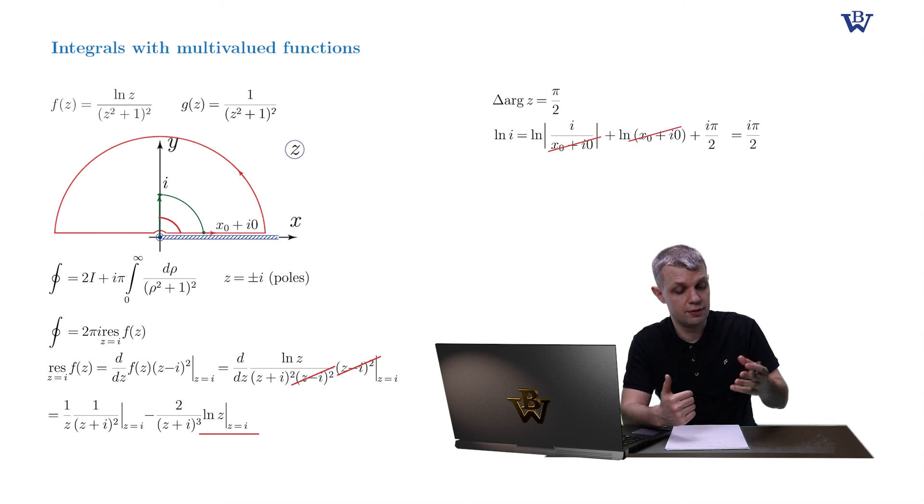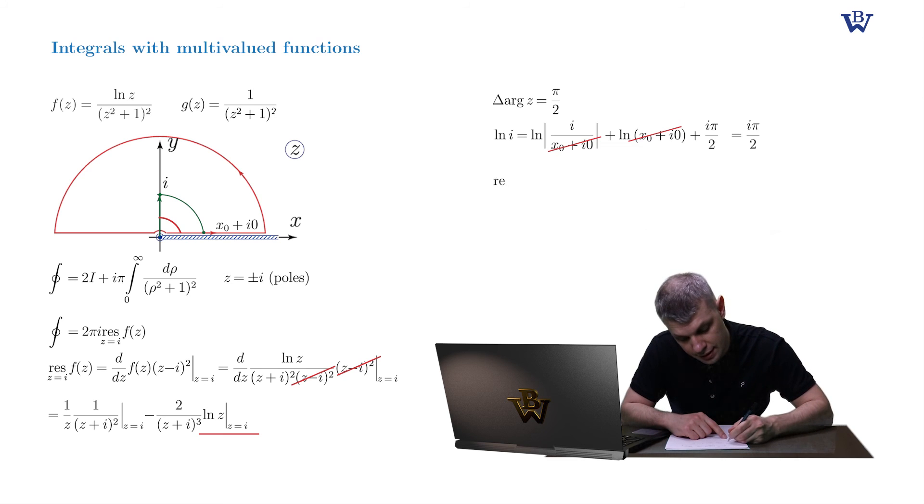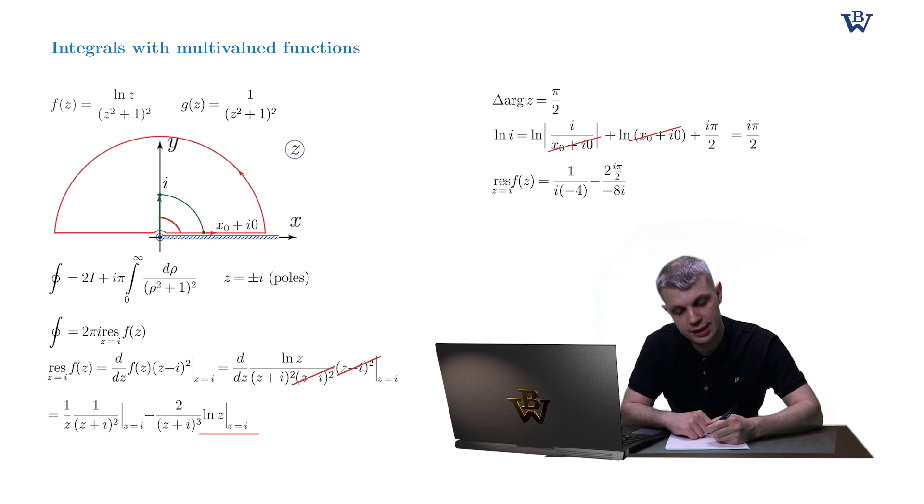So let's collect all the terms together. So the residue of f now yields 1 over i times minus 4, minus 2i pi by 2, divided by minus 8i. So we get minus 1 by 4i plus pi by 8.